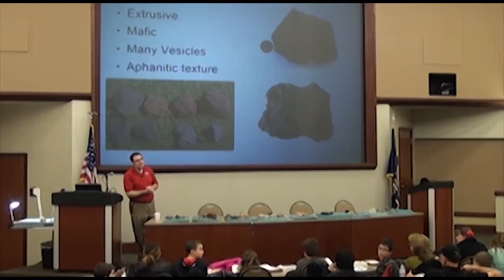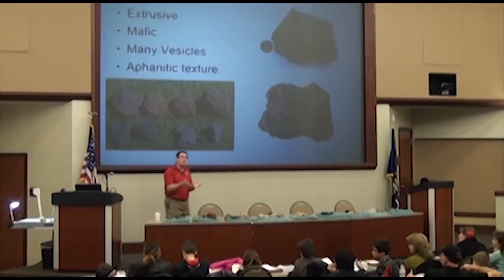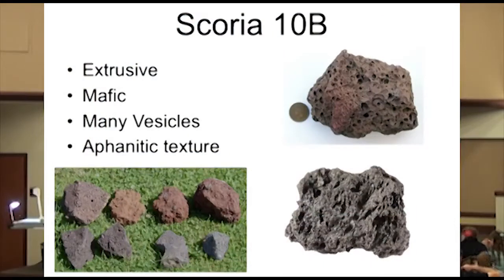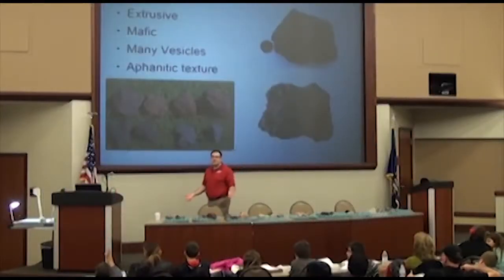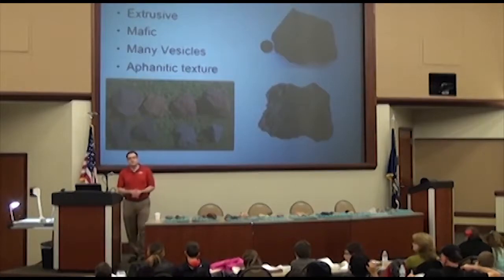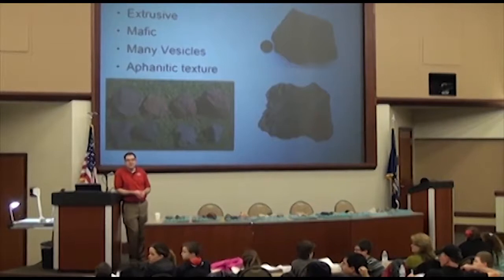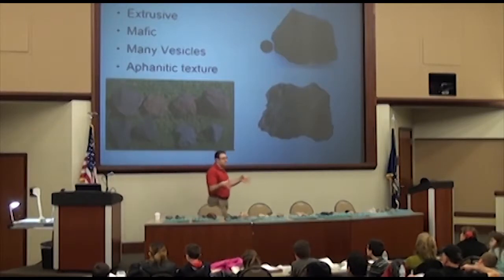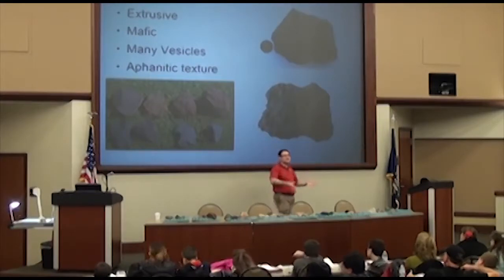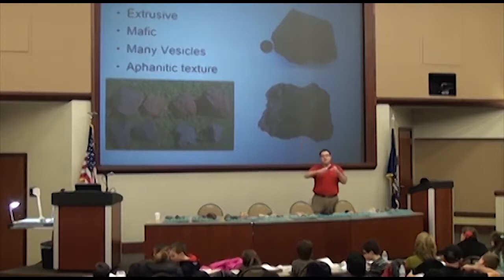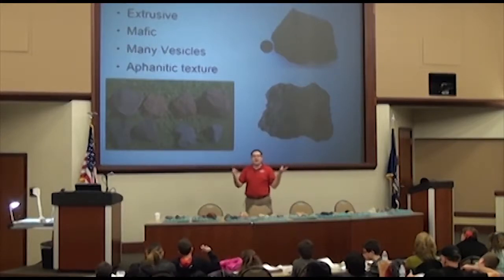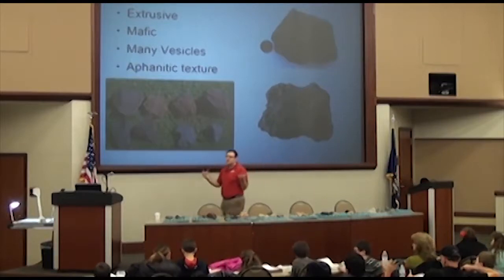Does scoria always have little holes in it? Yes — if it doesn't have the little holes in it, it's not going to be scoria. How do the gas bubbles come? The gas bubbles are from dissolved gases that were inside the magma. When it came out of the earth, the bubbles were rising — just like if you shook up a pop and opened it and had all the foam shooting out. Imagine that was liquid rock and then it froze instantly — that's how it formed.